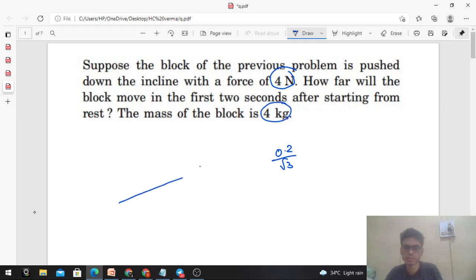This block is kept on the inclined plane. Initially, the component of mg which is mg cos theta acts upward in the normal direction. mg sin theta acts in this direction, and friction acts backward because the block was moving downward. So kinetic friction is acting, which is mu k into normal, which was mu into mg cos theta. Normal is mg cos theta.